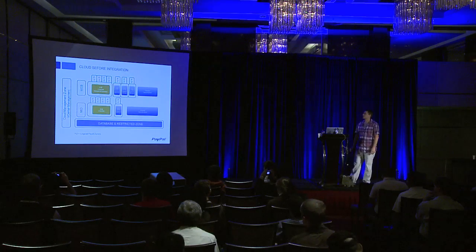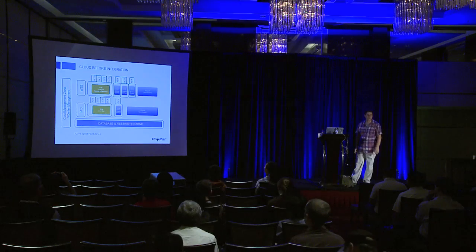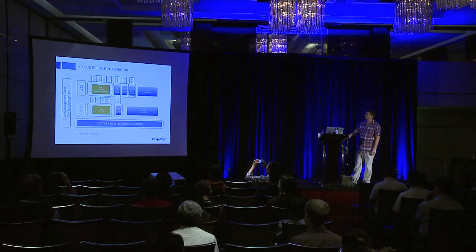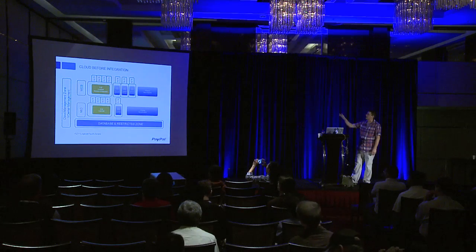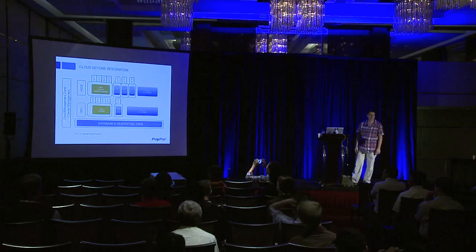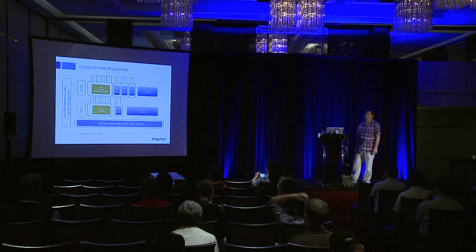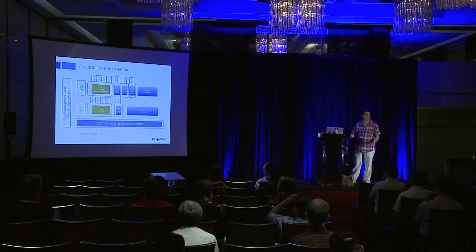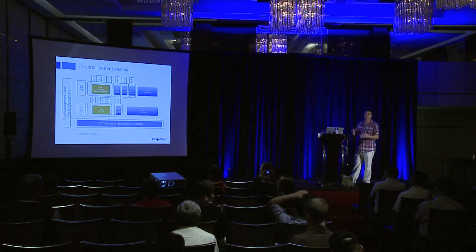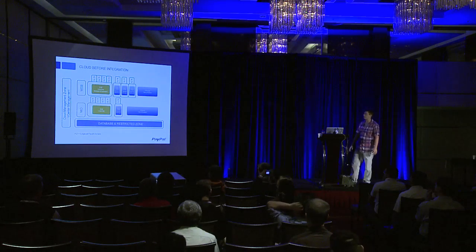We had our first set of hypervisors in production in December of 2012, and since then we've deployed a lot more. Looking at about June of 2013: FC is fault zone. At PayPal, standard high availability rules apply — we need four of everything, three data centers, et cetera. So you end up needing 12 of everything.